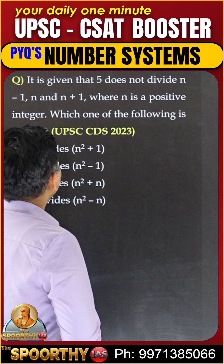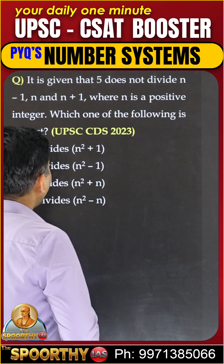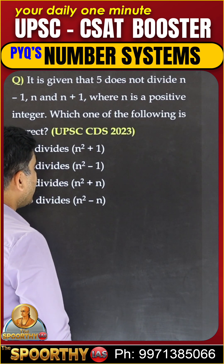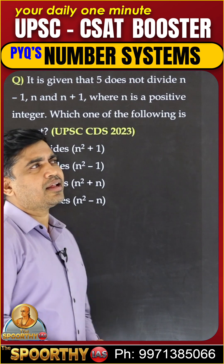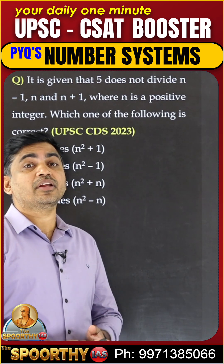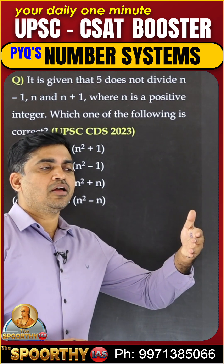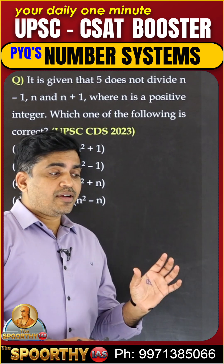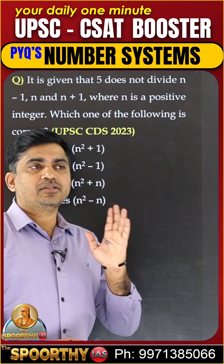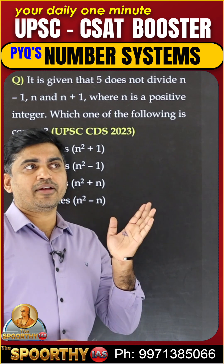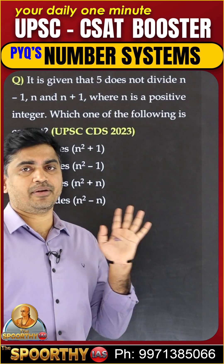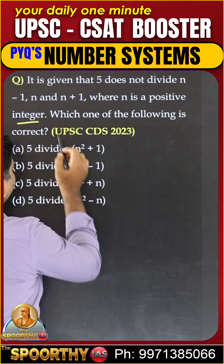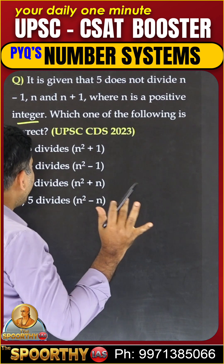Look at this. It is given that 5 does not divide n minus 1, n, and n plus 1 — meaning three consecutive numbers: first number, second number, third number. 5 does not divide them. It means take numbers other than multiples of 5. Where n is a positive integer, you can take any value from 1, 2, 3.